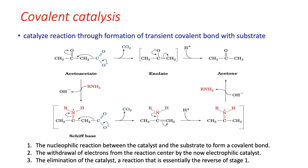Covalent catalysis: in covalent catalysis there is a transient covalent bond formation between the substrate and the enzyme, and once the reaction is over the covalent bond is broken, products are released, and the enzyme is regenerated. Decarboxylation of acetoacetate by primary amine is an example. In the uncatalyzed form the reaction takes place slowly through formation of an enolate transition state. In the presence of primary amine, the amine nucleophilically attacks the carbonyl carbon, forming a Schiff base.